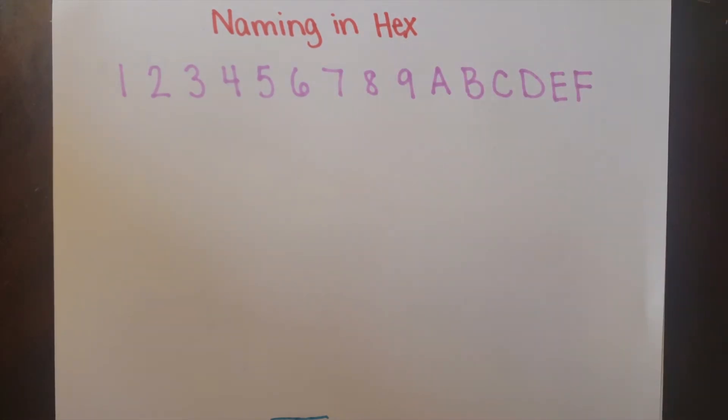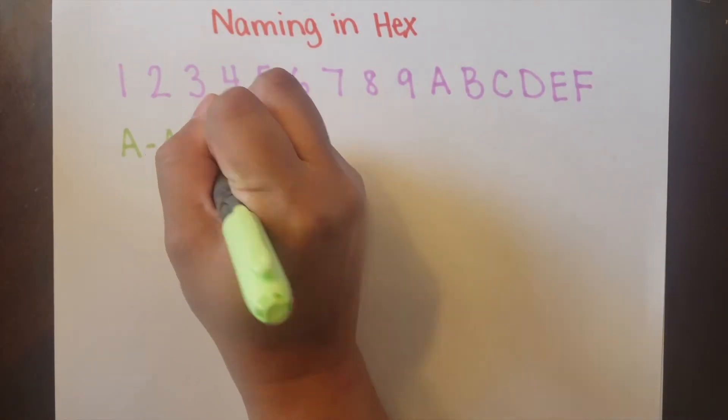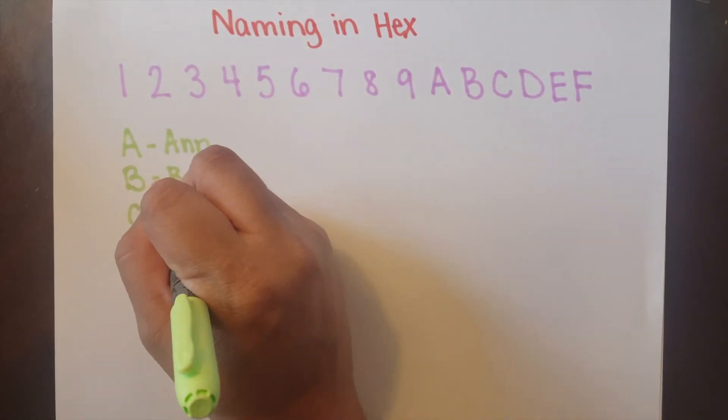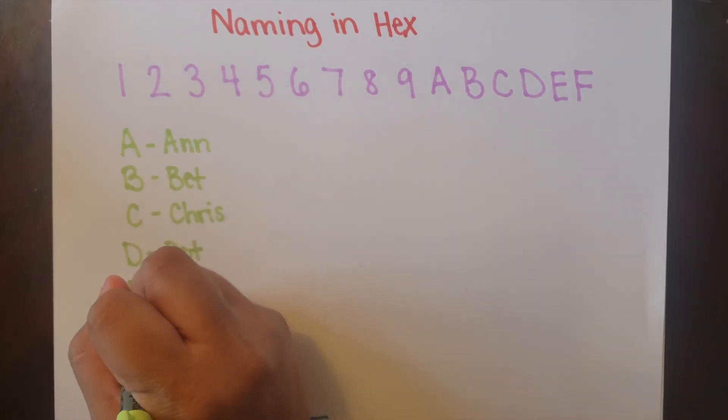The following naming method has been used to help differentiate hexadecimal numbers from letters. After the number 9 we write an A for Ann, B for Bet, C for Chris, D for Dot, E for Ernest, and F for Frost.